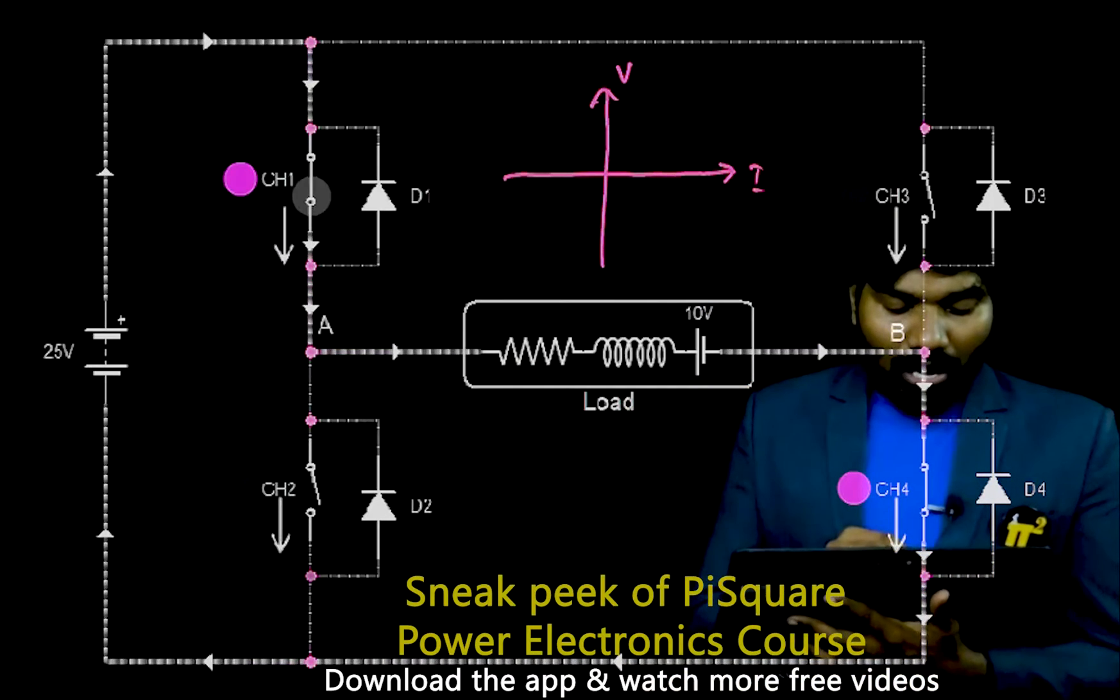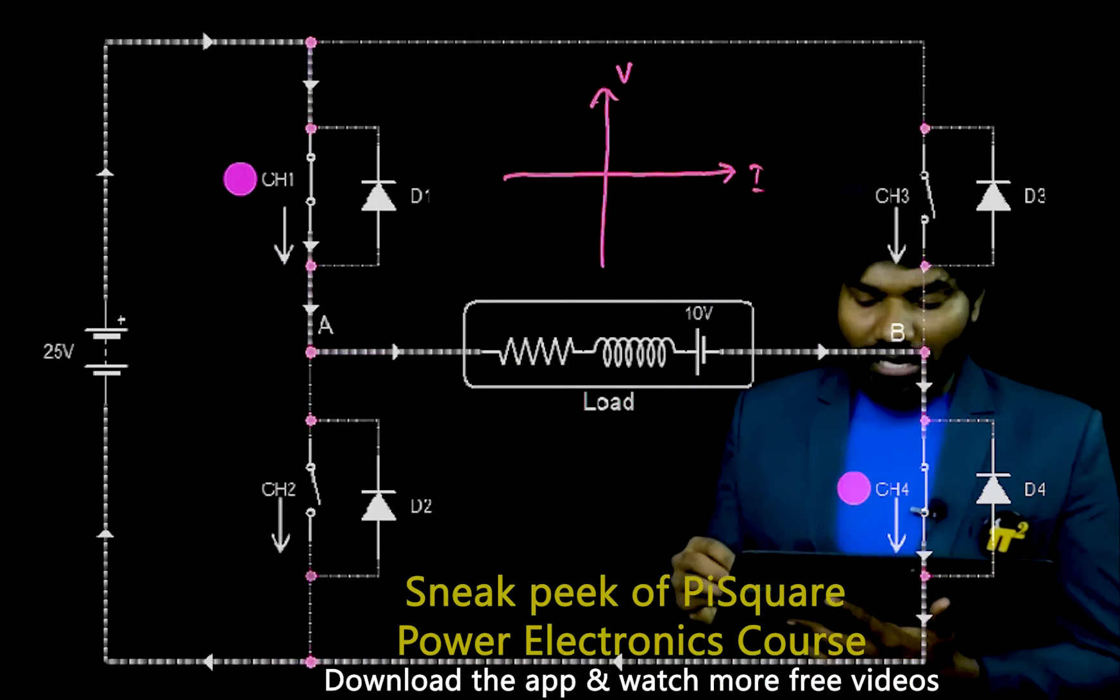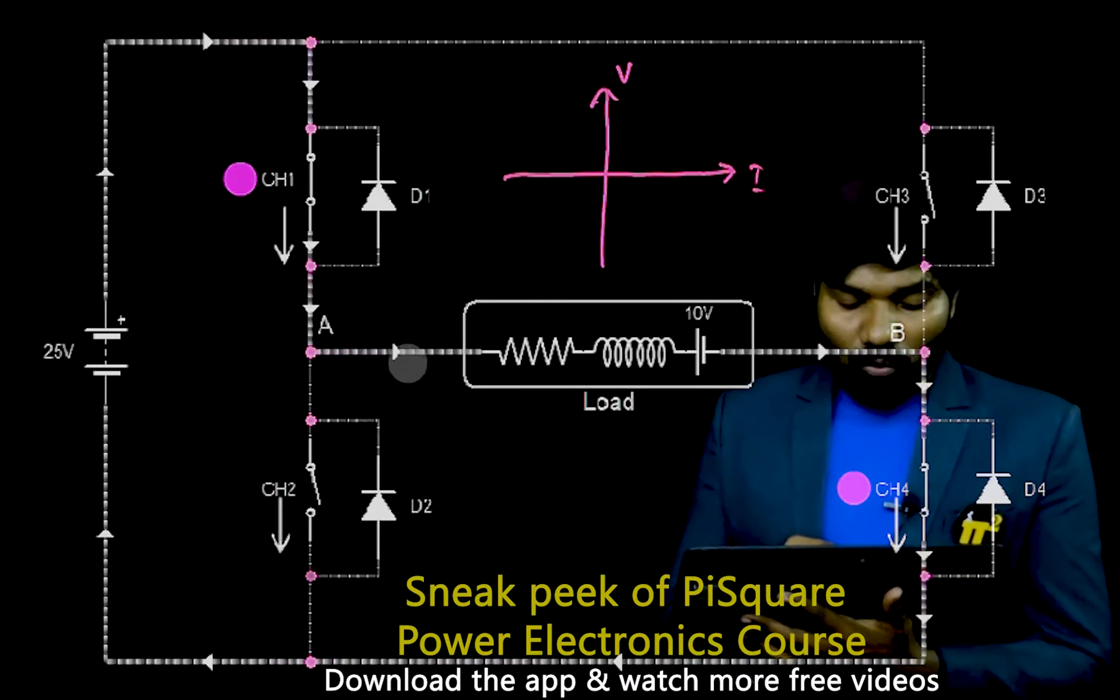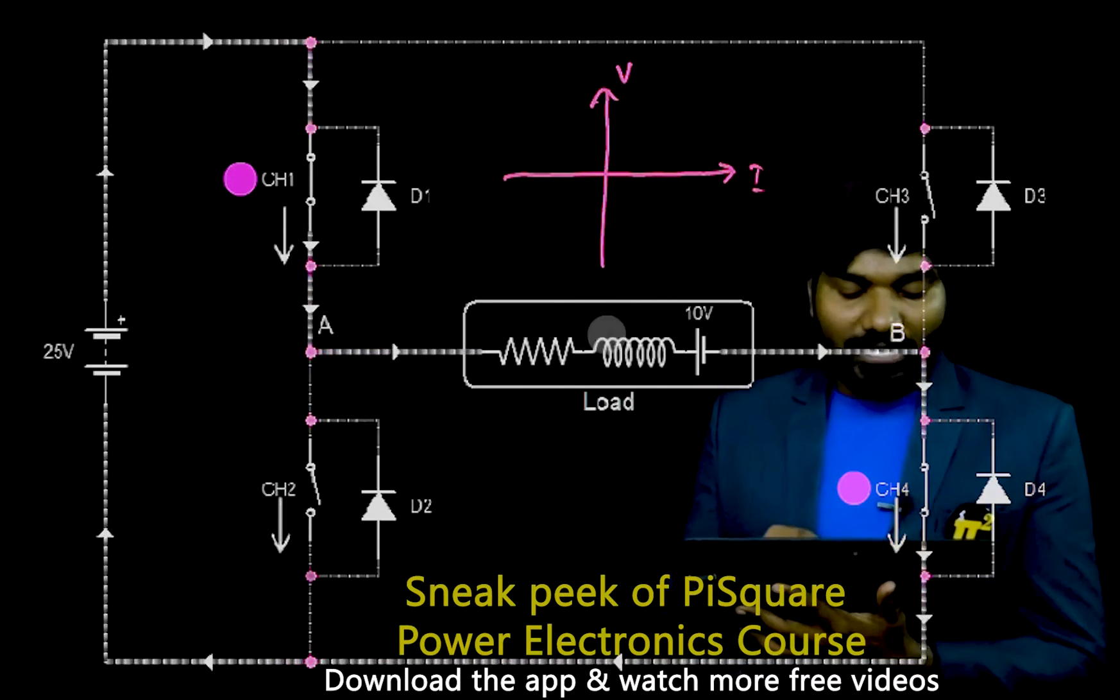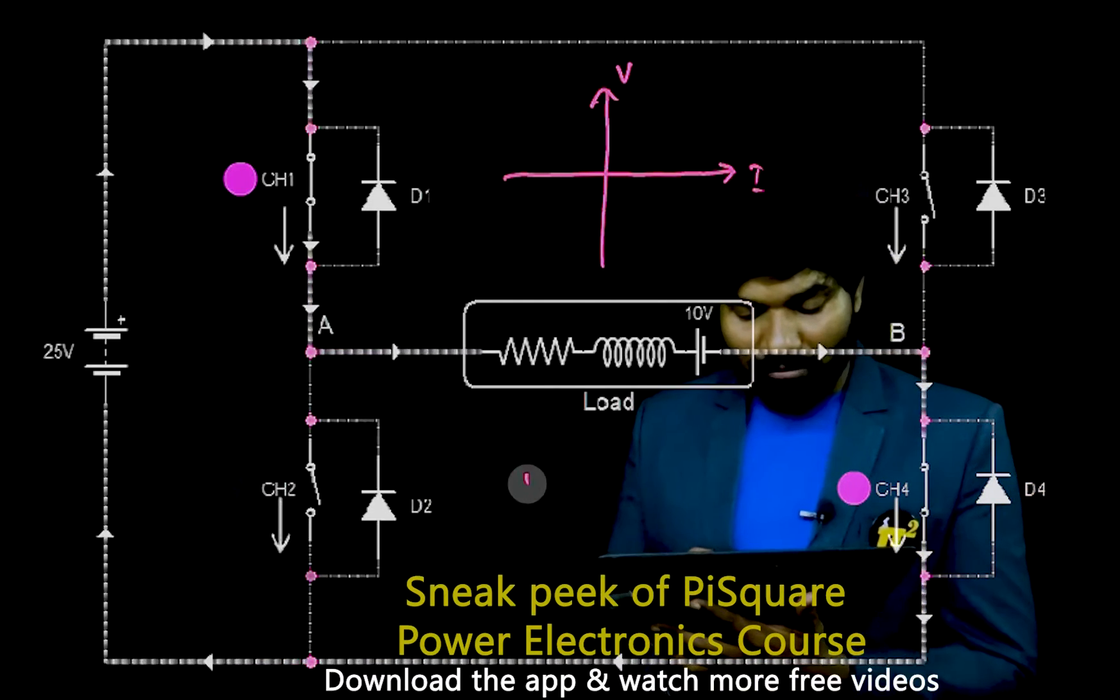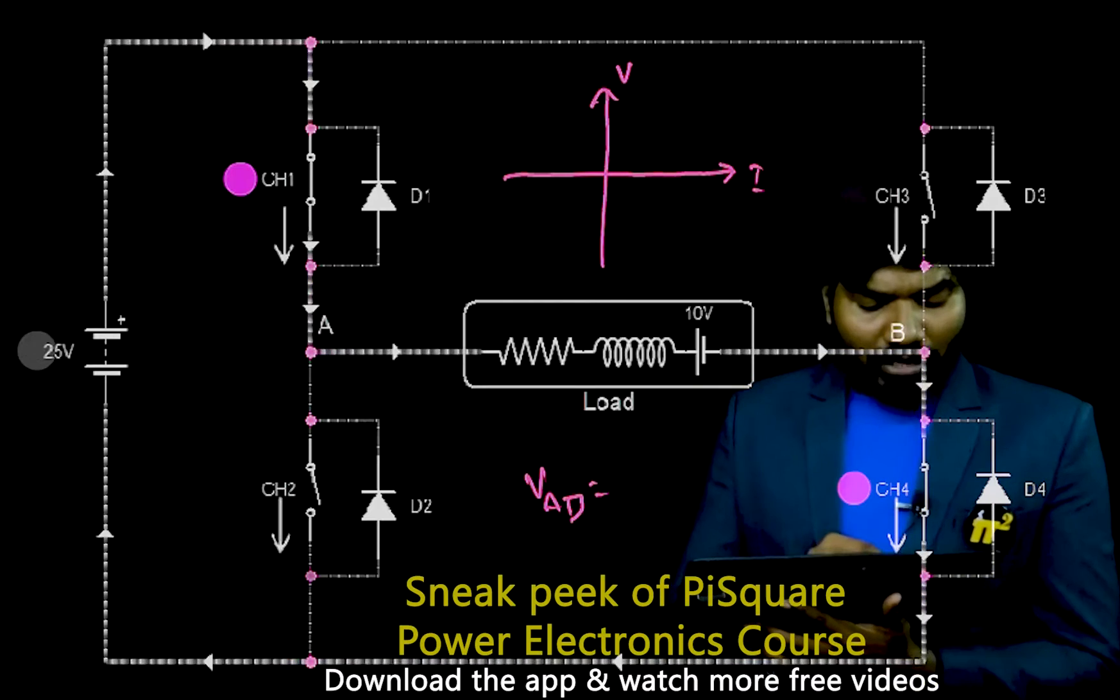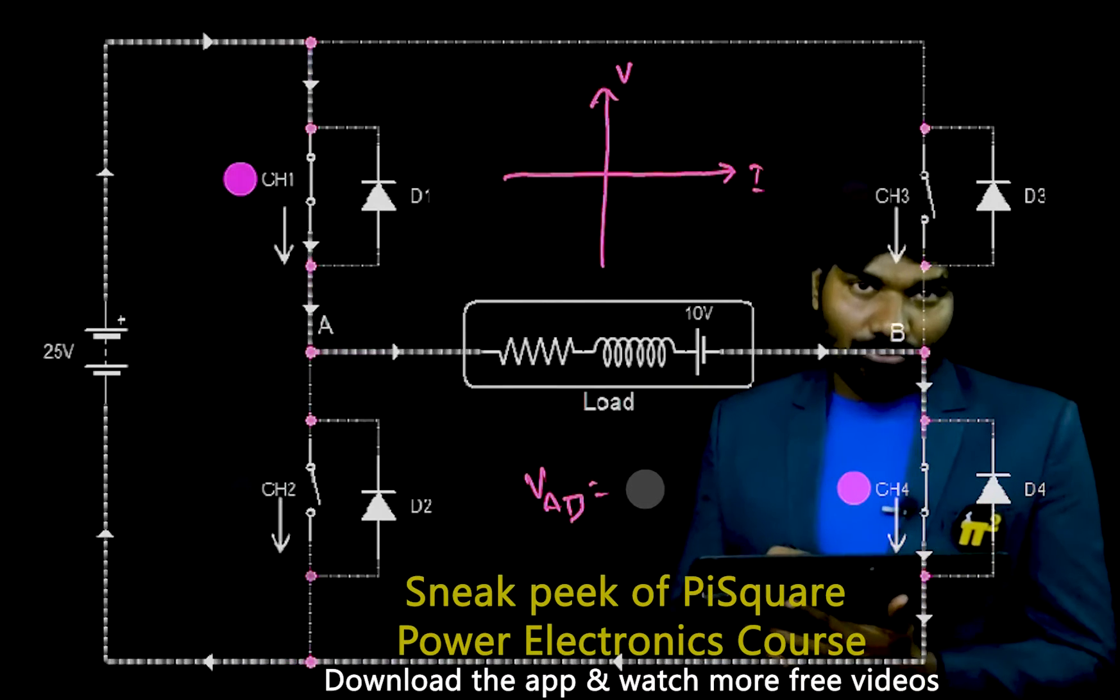Now, the moment I open this, tell me at this stage, what is VAB? VAB is positive. VAB is equal to, if this is 25V, as it is, we will get 25V.